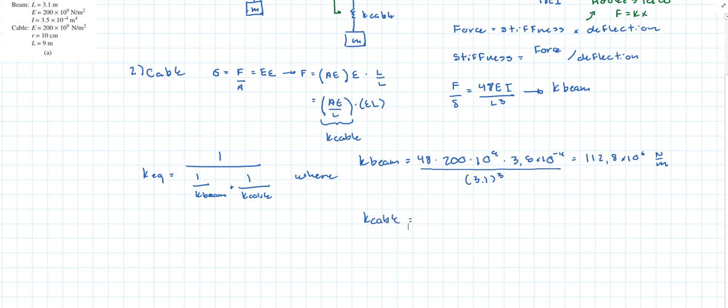All right let's do the same thing for the cable. And then we said that it was equal to the area which is π times r squared times Young's modulus, which is the same material, divided by L and L is equal to 9 for the cable. And so we get 698.1 newtons per meter.